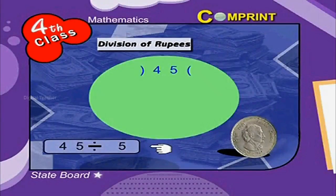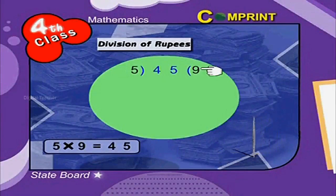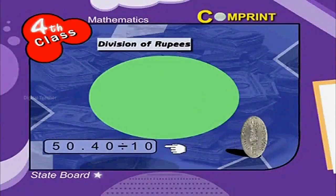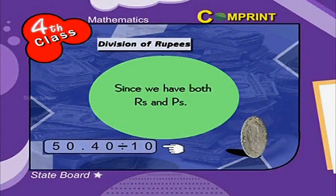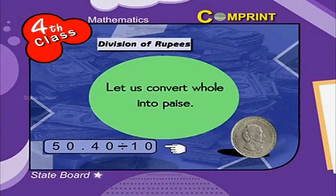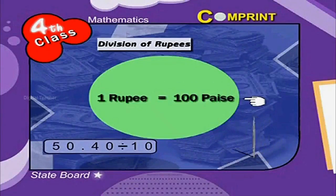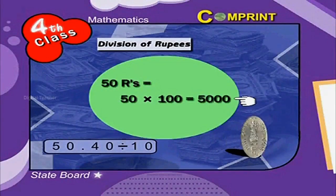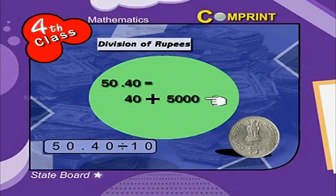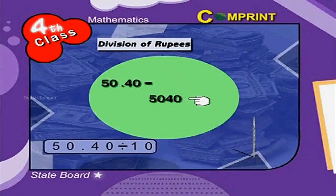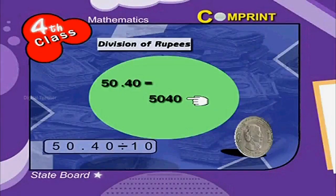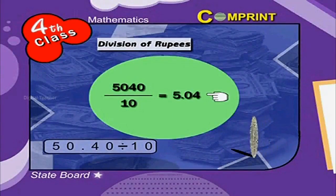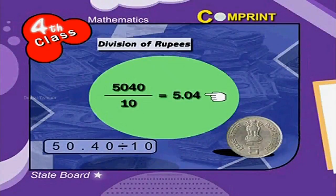In another example: 50 rupees 40 paisae divided by 10. Since we have both rupees and paisae, let us convert the whole into paisae. 1 rupee is equal to 100 paisae, so 50 rupees is equal to 5000 paisae. When we add 40 paisae, we get 5040 paisae. Now let us divide it among 10 members: 5040 divided by 10 is equal to 504 paisae, or 5 rupees 4 paisae.